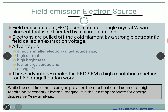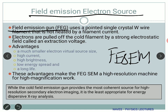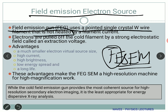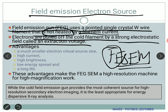Now for the field emission electron source, we apply a very high electric field to generate electrons. This is called FEG, and if you have come across the term FESEM, it stands for Field Emission Scanning Electron Microscopy. In FEG, it uses a pointed single crystal tungsten wire — the filament is not heated by filament current. The electrons are pulled off the cold filament by applying a strong electrostatic field called an extraction voltage.